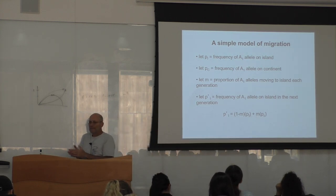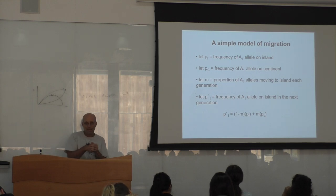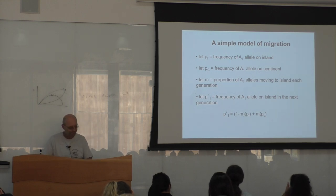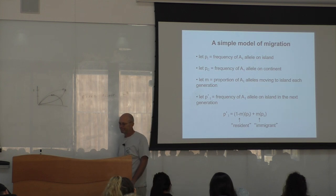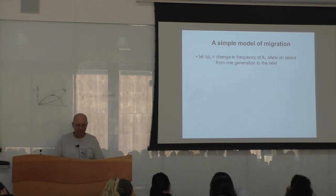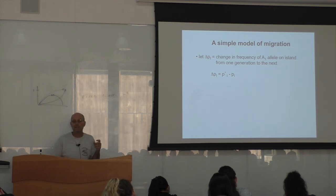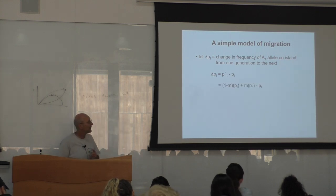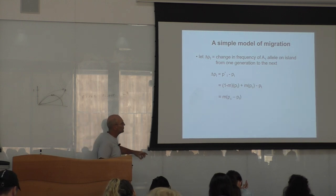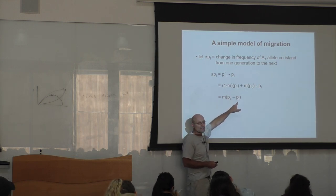Because these individuals did not migrate, their rate is 1 minus n. Then we need to add the frequency of allele 1 on the continent, Pc, multiplied by the migration rate — how many individuals came into the islands. Some individuals stayed on the islands (residents) and others came in (immigrants). Delta P'I is the change of frequency on the island from one generation to the next: it equals the migration rate multiplied by the frequency on the continent minus the frequency on the island.